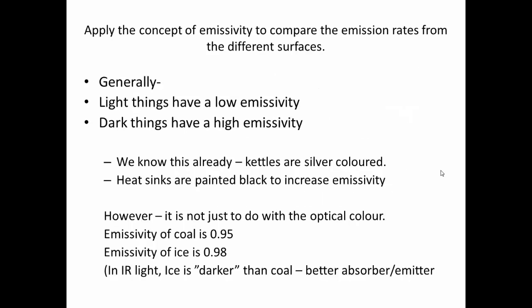Comparing different surfaces: generally light things have a low emissivity and dark things have a high emissivity. For example, kettles are light colored so they emit less radiation. However, it's not just about optical color. The emissivity of coal is 0.95, while the emissivity of ice is even greater at around 0.97, so ice actually emits more radiation and is closer to a black body than coal. The reason is that ice is much darker than coal in the infrared part of the spectrum, even though we don't see that in the narrow visible band.